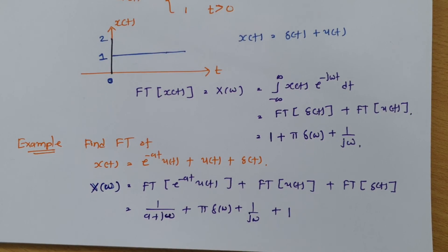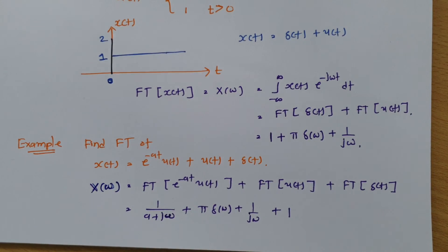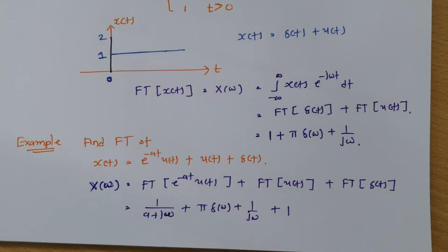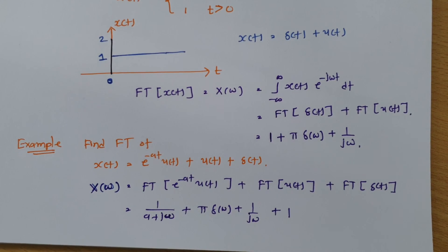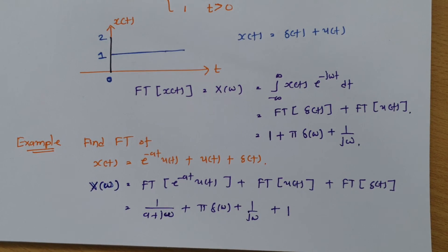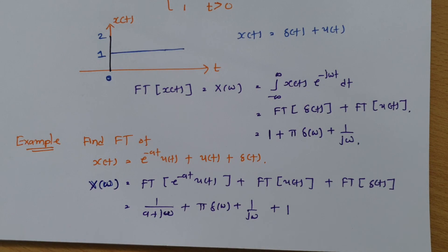This is how using the linearity property for algebraic addition of time domain signals gives you a simpler way of calculating the Fourier transform. I hope you have understood this session on how to apply the linearity property. Thank you for watching. You can download this material from my application using the link in the description of all videos, and access all materials free of cost.